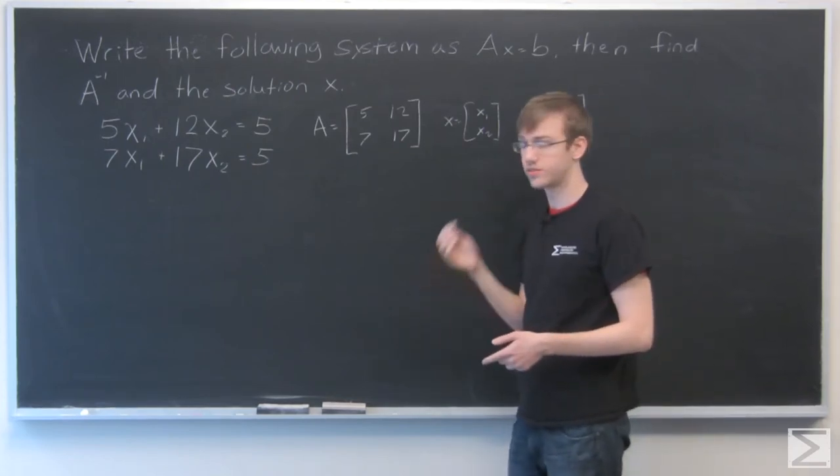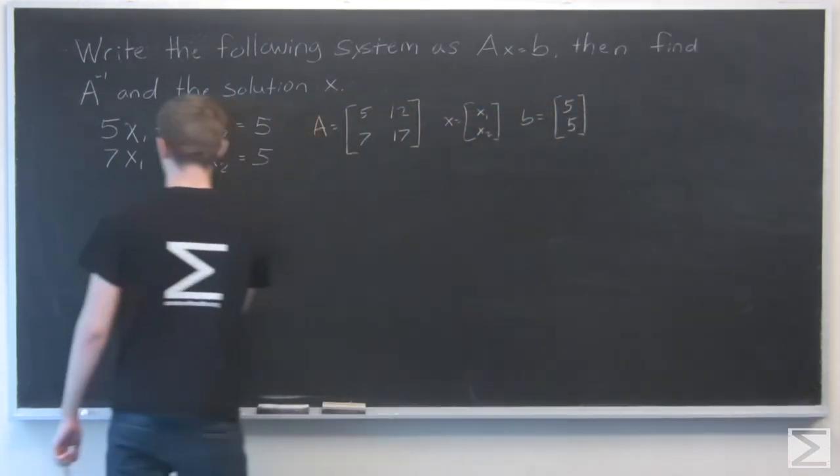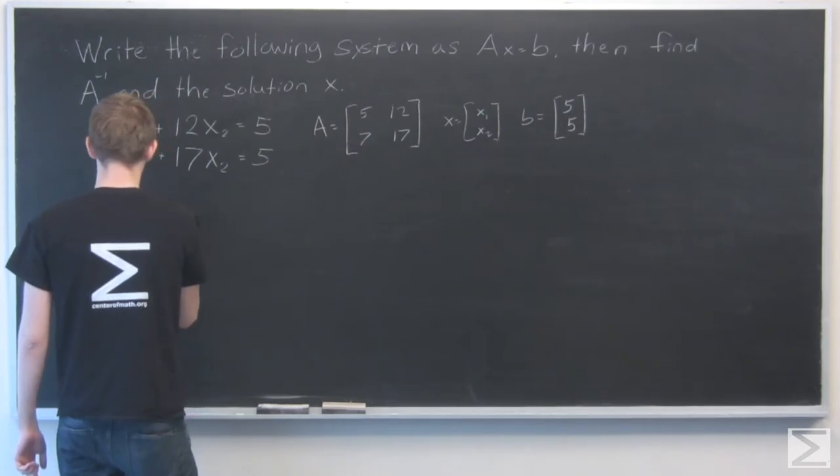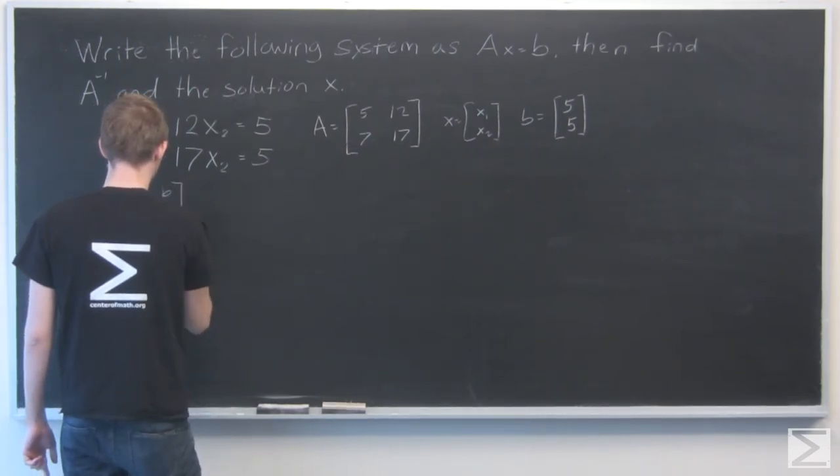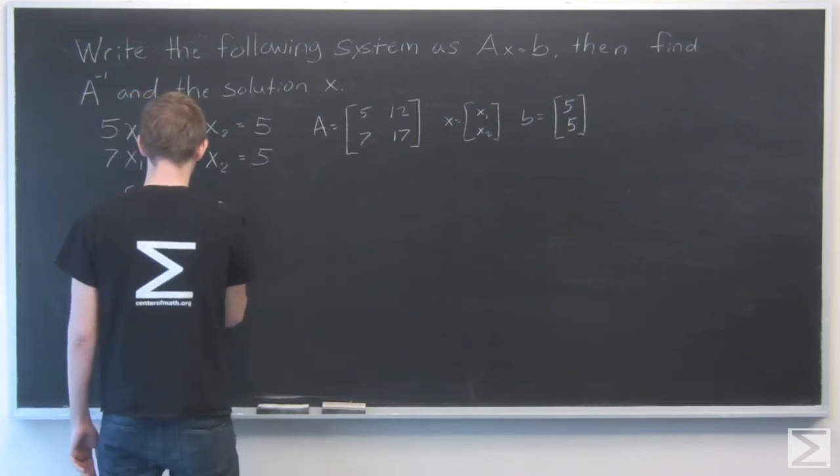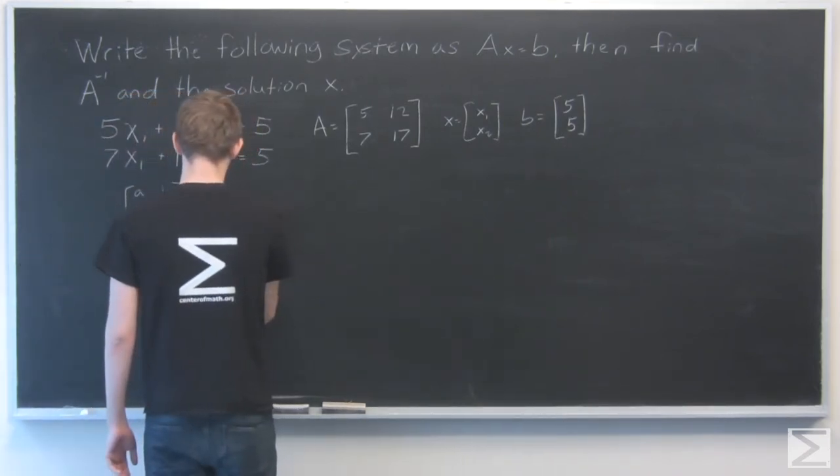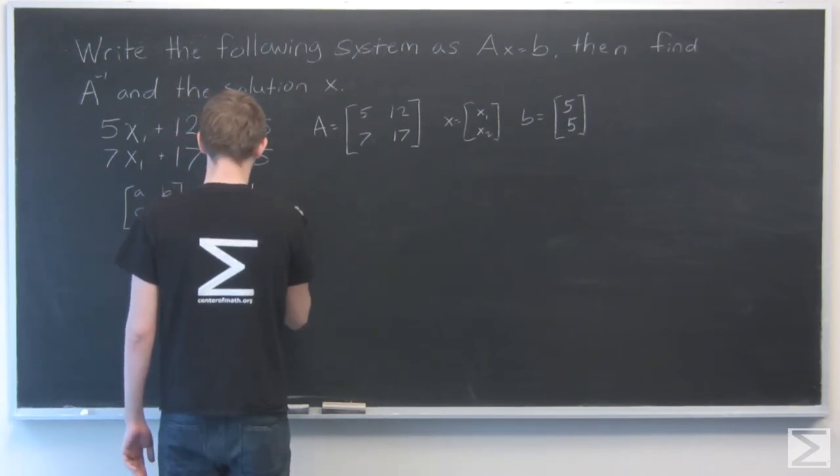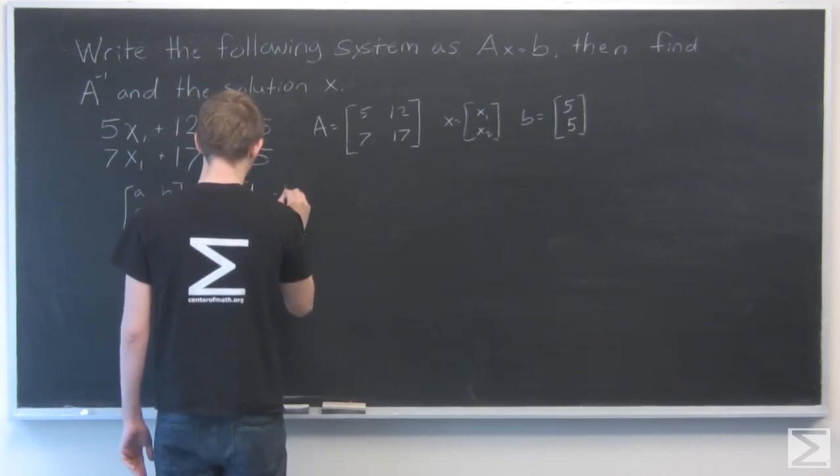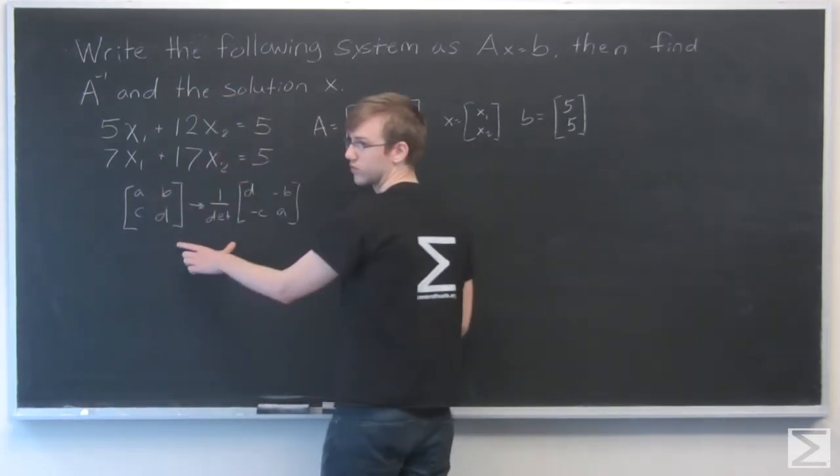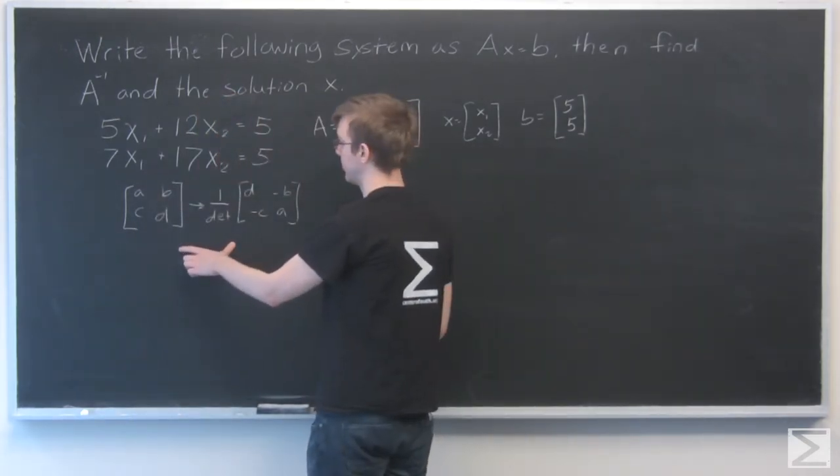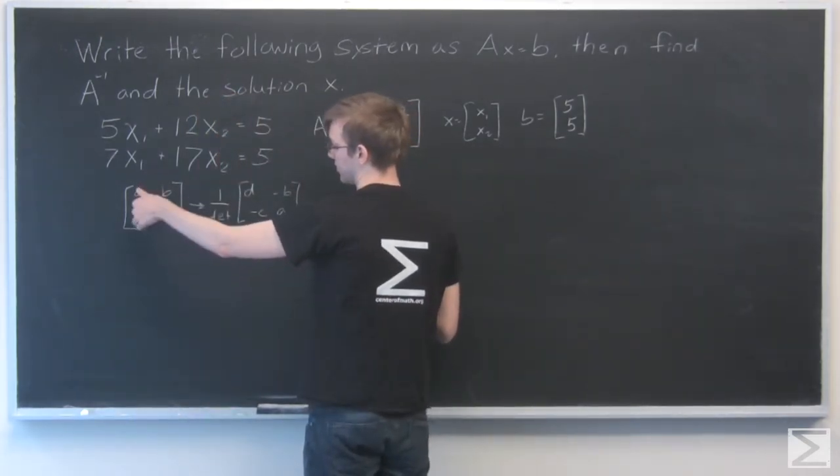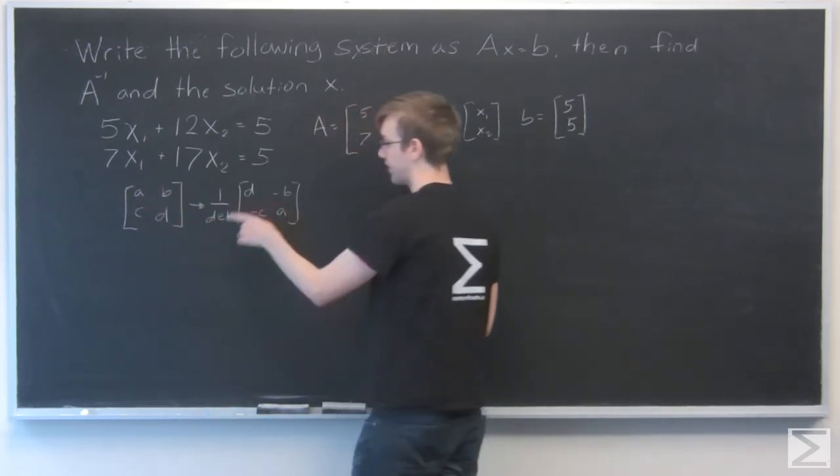So to calculate A inverse, here's the formula for the inverse of a 2 by 2 matrix. The A and D are switched around, the C and B become negative and divide by the determinant.